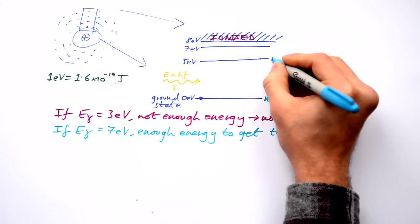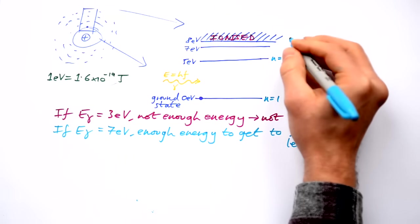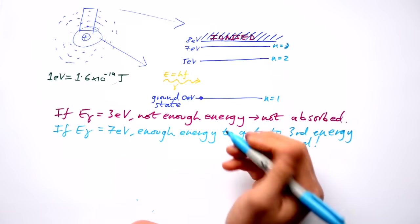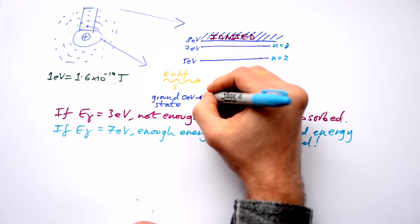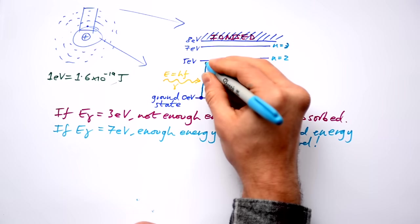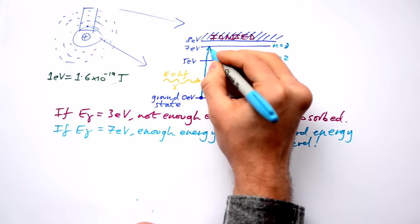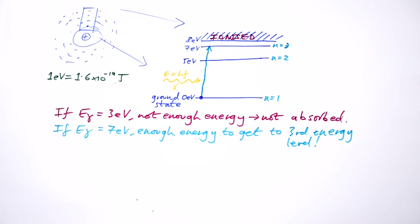We give these, by the way, numbers n. One is the ground state, then n two, then n three. So here we go. The electron has absorbed the photon and it goes up to this energy level here. Hurrah! It's absorbed a photon of the right amount of energy because it has just the right frequency and it's gone up to that third energy level.